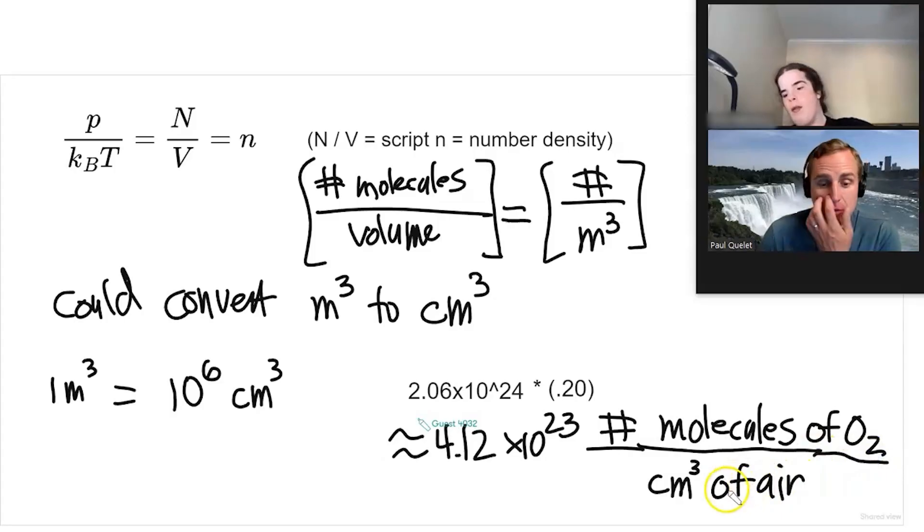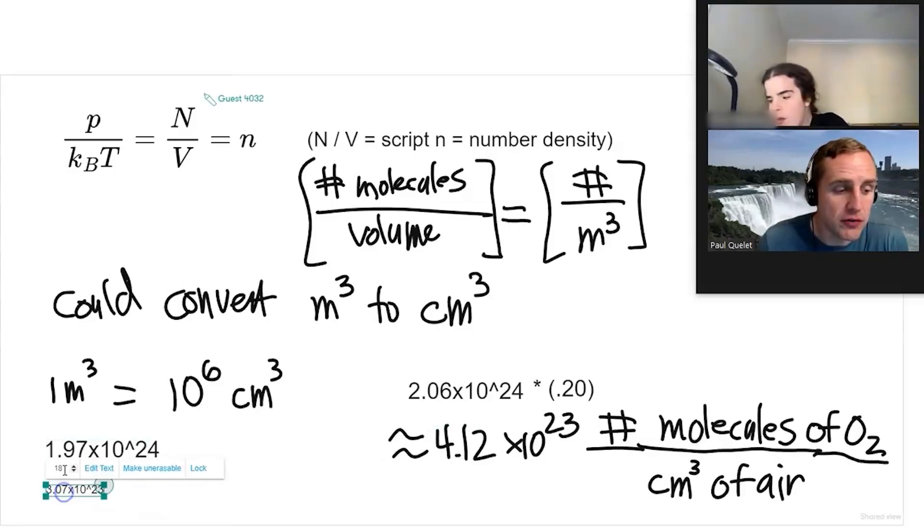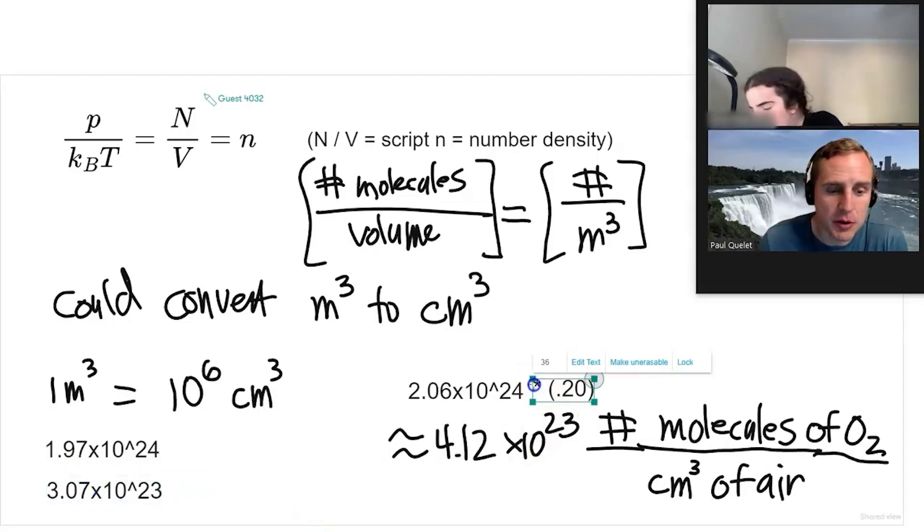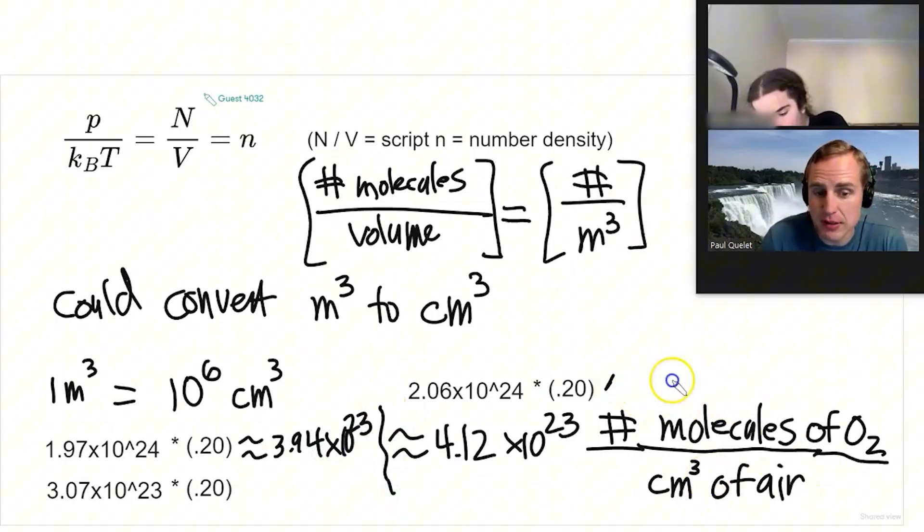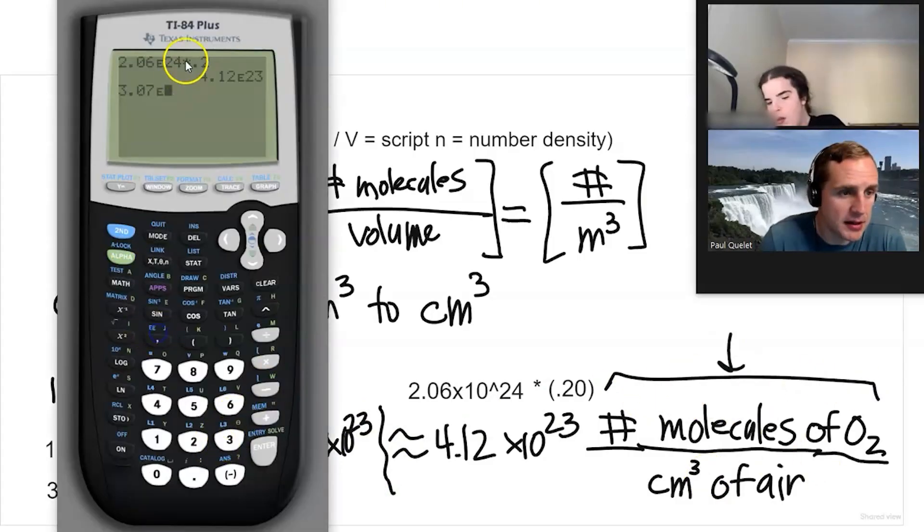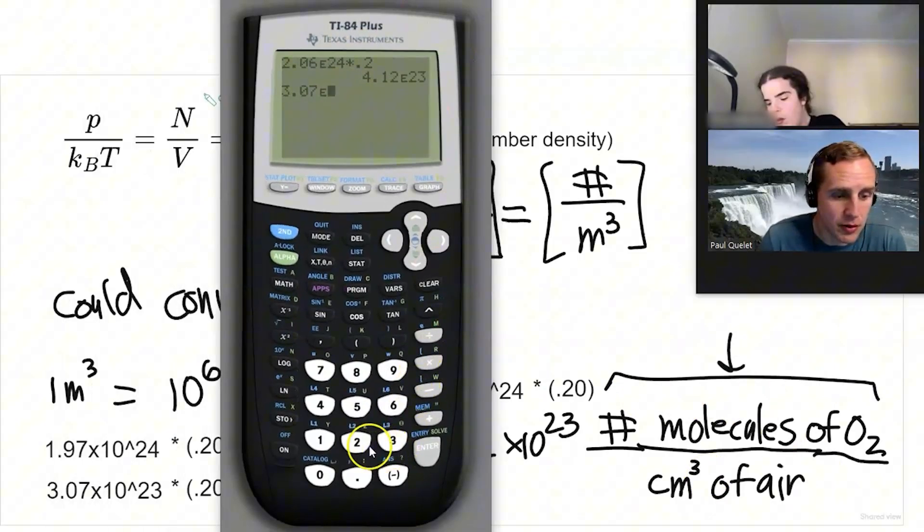If you want to be even more technical, it's number of molecules of oxygen per centimeters cubed of air. Hopefully one of the things you're already seeing is that we do try to be very precise when we communicate some of these ideas. Each of these we have to find the oxygen, so we're going to multiply by the point two zero. It's going to have the same units as this: times 10 to the 23rd times point two zero, so 6.14 times 10 to the 22nd.